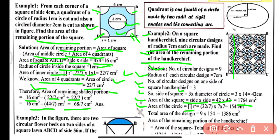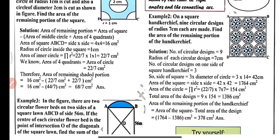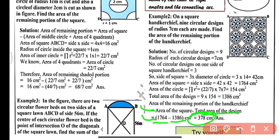Area of each circle = π r² = 22/7 × 7 × 7 = 154 cm². Total area of 9 circular designs = 9 × 154 = 1386 cm². Area of remaining portion of handkerchief = area of square − area of 9 circles = 1764 − 1386 = 378 cm².